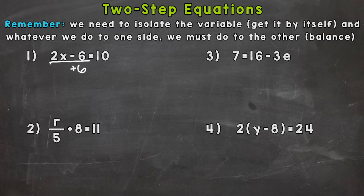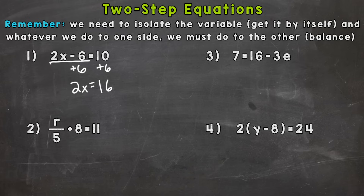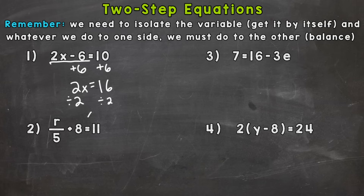Remember whatever we do to one side we have to do to the other. So if we add 6 to the left we need to add 6 to the right. Negative 6 plus 6 gives us 0, and 10 plus 6 is 16. On the left side we're left with 2x. We don't have the variable completely isolated yet but we're almost there. The opposite of multiplying by 2 is dividing by 2 — that gives us 1x, which is just x. So let's divide both sides by 2, leaving us with x equals 8.